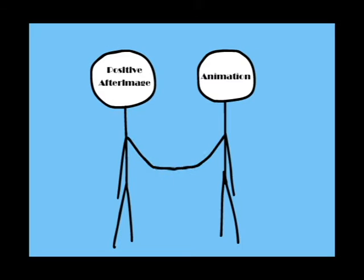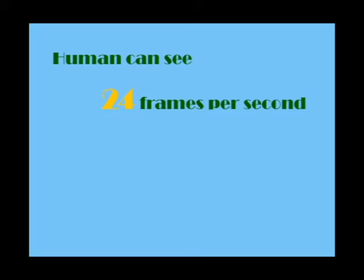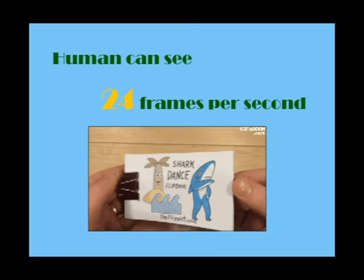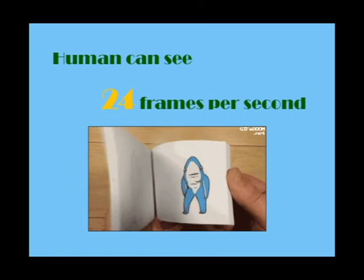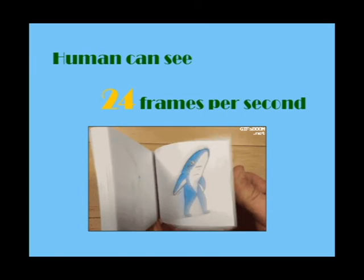A positive after image plays a key role in animation. Humans can see 24 frames per second. That's why the frame rate for all kinds of animation is set to more than 24 frames per second, so we can see the animation moving continuously.